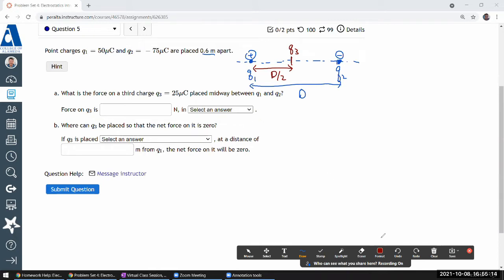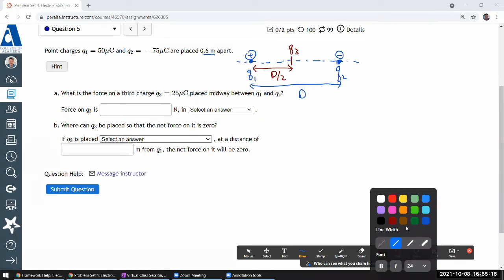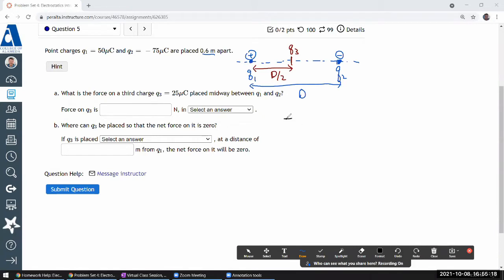So the free body diagram for the charge Q3, and it's only going to have explicitly specified the forces from things that you know are in the system. I have Q1, I have Q2, and Q3 is another positive charge.